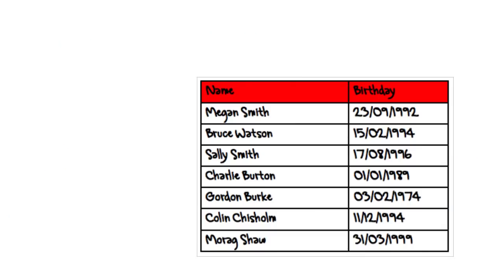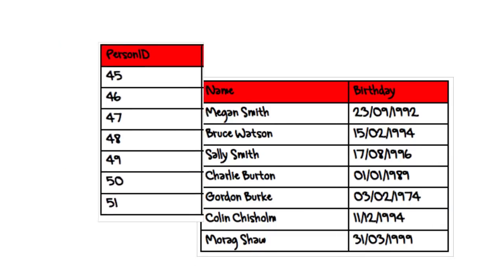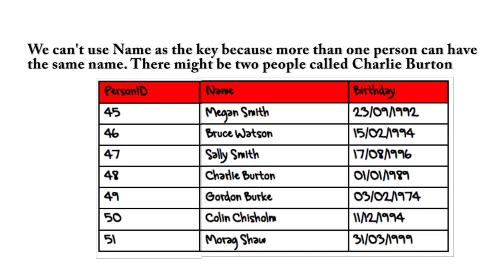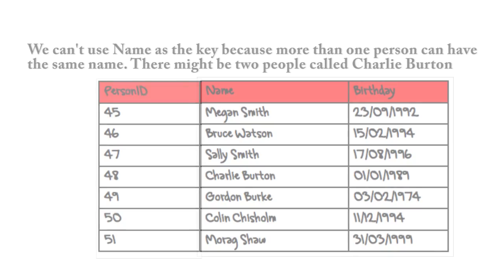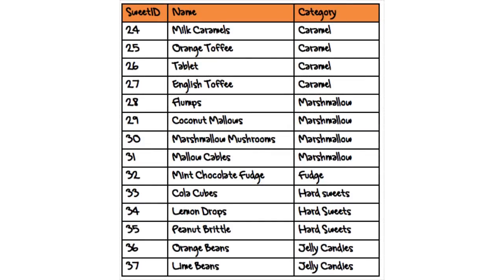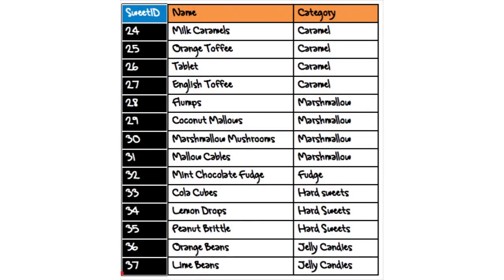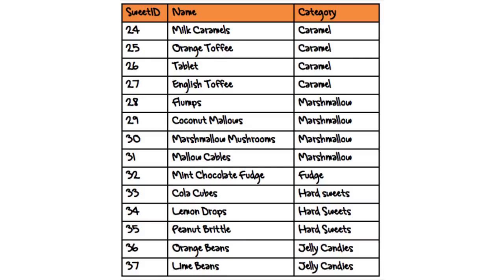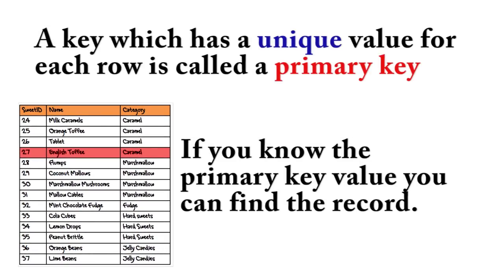But at other times we have to add a new column to store the key field. Bob has added a column called Sweet ID to his database. In this case, the value of Sweet ID is a different number for every record in the database. This type of key, where each record has a unique value, is called a primary key.